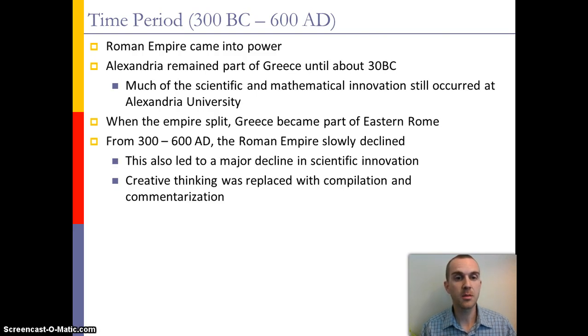This is during the major time of the Roman Empire. Alexandria was able to remain part of Greece until about 30 BC, and it was up to that point that we see much of the innovations in science and mathematics come out of the university.